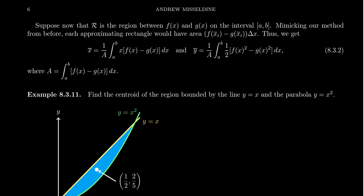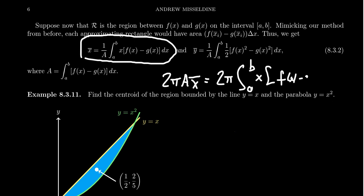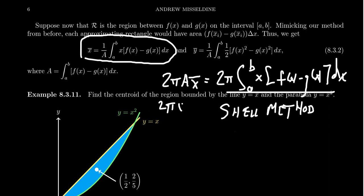If you take this formula right here for x-bar, if you times both sides by 2 pi a, you're going to get that 2 pi a x-bar equals 2 pi, the integral from a to b, of x times f of x minus g of x dx. And if this formula over here looks familiar at all, that's because this formula is none other than the shell method that we had learned about previously. And so you'll notice here that if you take together 2 pi x-bar, which is the circumference of the circle formed by rotating the centroid around an axis, and then if you times this by the area of the region, that the distance traveled by the centroid times by the area is equal to the volume of the solid revolution.